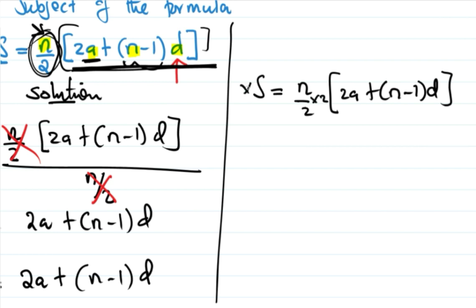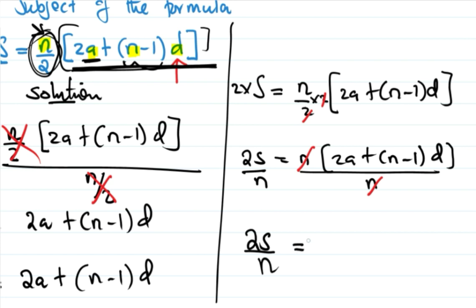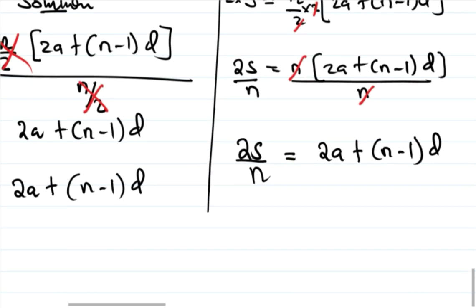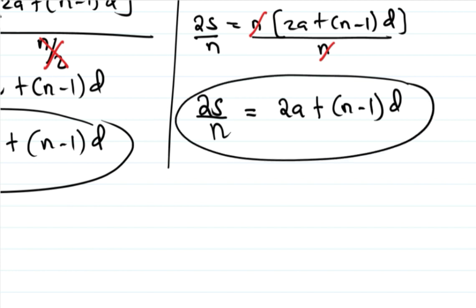We need to remove the denominator. We can see 2a is on the other side. So we have 2a plus n minus 1 times d. We need to move 2a across. So 2S over n equals 2a plus n minus 1 times d — that's the same thing, yes, and then we move to the next step.